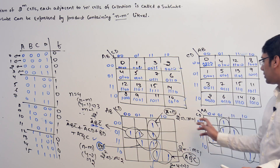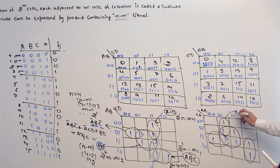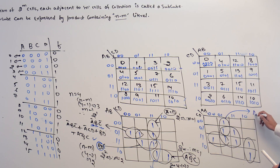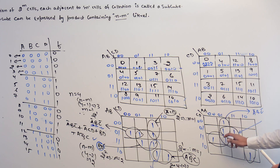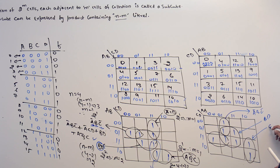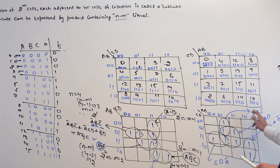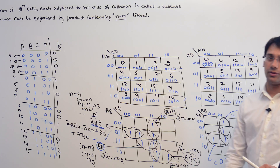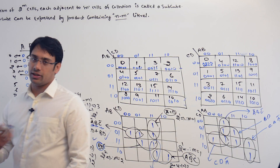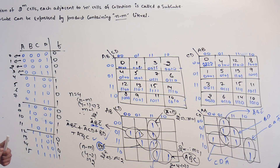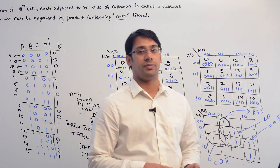This cell is representing A complement B C complement, this cell is representing A complement B C complement, and this cell is representing B and D. If you add all these four terms, you are going to get the same solution. Let me take one more example of a K-map and then we will discuss what are the implicants, what are prime implicants, and what are the essential prime implicants.